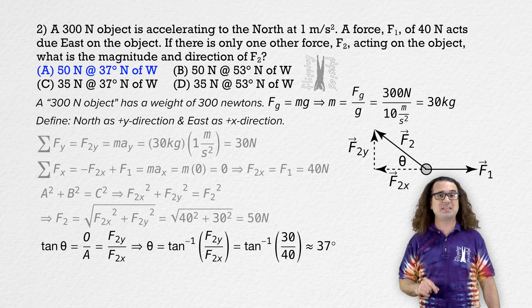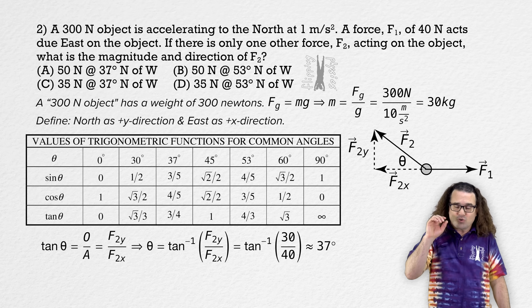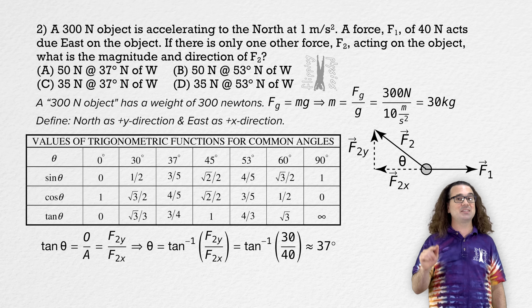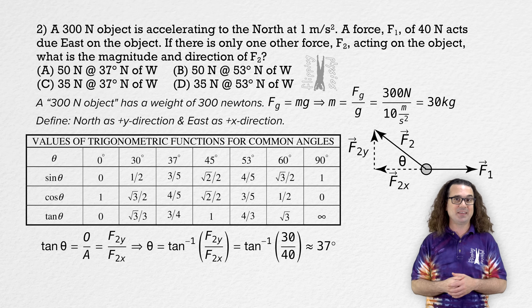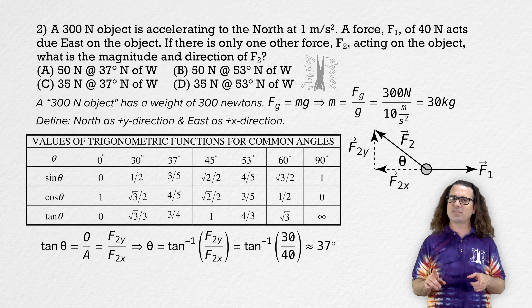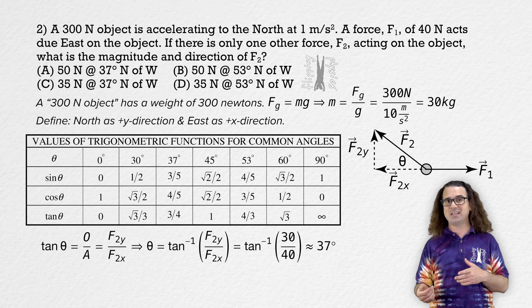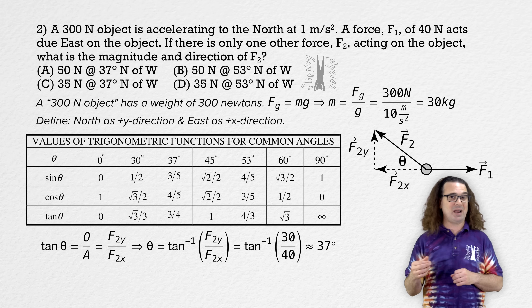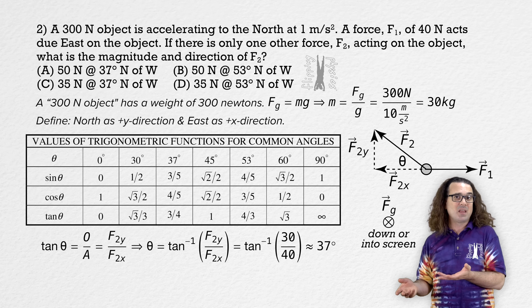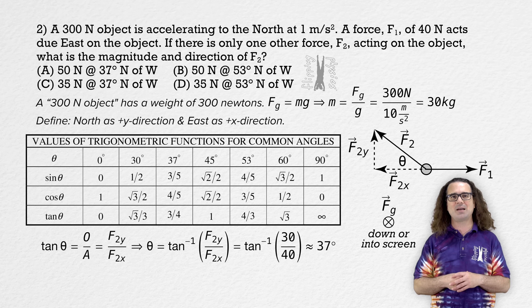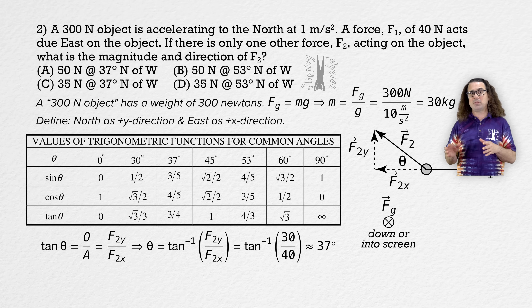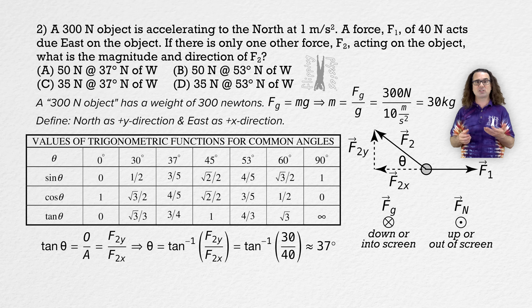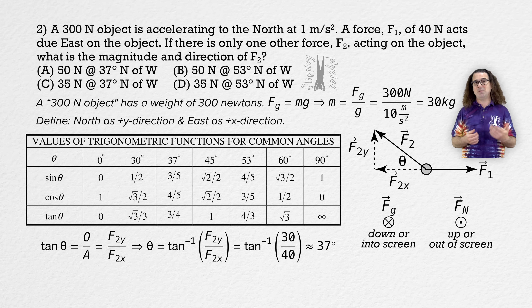Well done, everybody. Be aware that the College Board provides values of trigonometric functions for common angles on the table of information which you will be provided on the exam. It's worth looking over that table before the exam to familiarize yourself with it. Also notice there must be a downward force of gravity acting on the object and therefore a counteracting upward force — probably a normal force — meaning the object is likely moving on a frictionless surface. All of that is ignored in the problem, which is something you will likely see on the AP Physics exam.